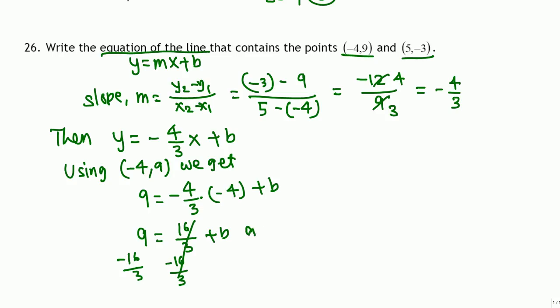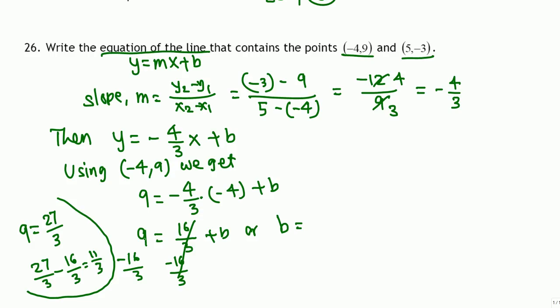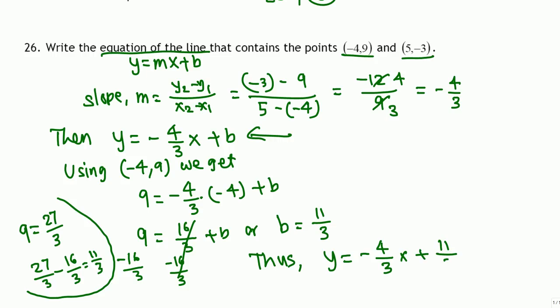Multiplying: negative times negative is positive, 4 times 4 is 16, so we get 16 over 3 plus b. Subtracting 16 over 3 from both sides: b equals 9 minus 16 over 3. Since 9 equals 27 thirds, we get 27 thirds minus 16 thirds equals 11 thirds. So b equals 11 thirds. The final equation is y equals negative 4 over 3 times x plus 11 over 3.